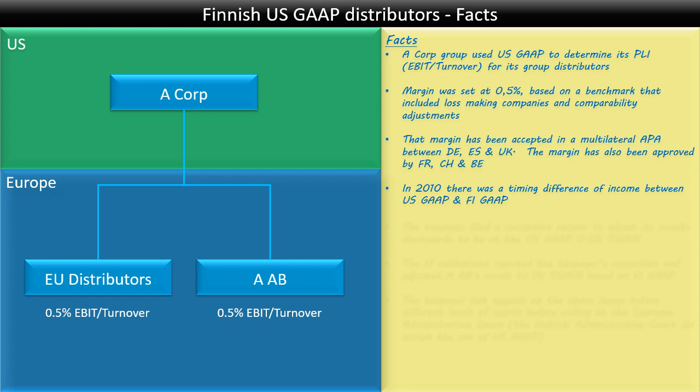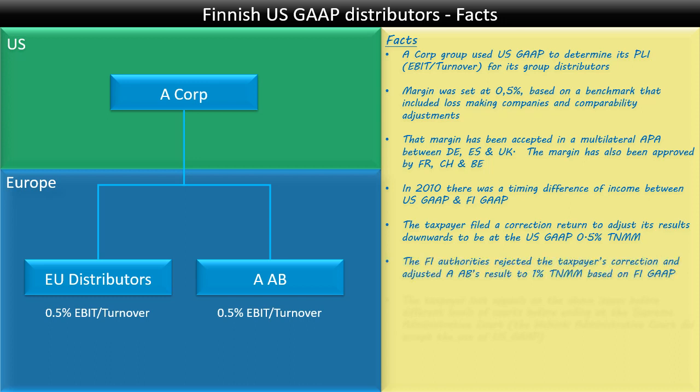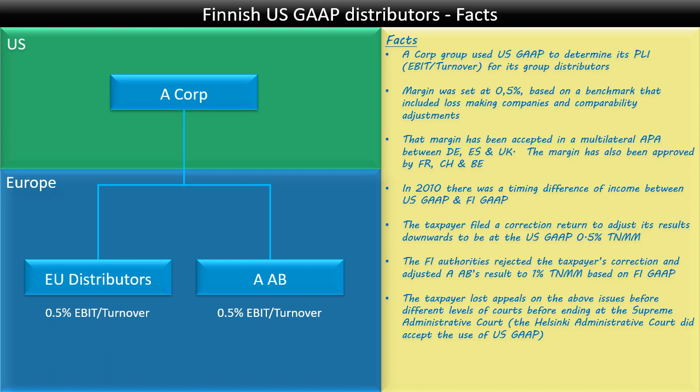In 2010, there was a timing difference of income between US GAAP and Finnish GAAP. The taxpayer made an adjustment and filed a correction return to adjust his results downward to be at the US GAAP 0.5 percent TNMM. However, the Finnish authorities rejected the taxpayer's correction and adjusted AAB's result — not only to 0.5 percent based on Finnish GAAP, but also argued that the 0.5 percent was not right because the benchmark included loss-making companies which should be excluded, and therefore adjusted the result to 1 percent. They also rejected the taxpayer's comparability adjustments.